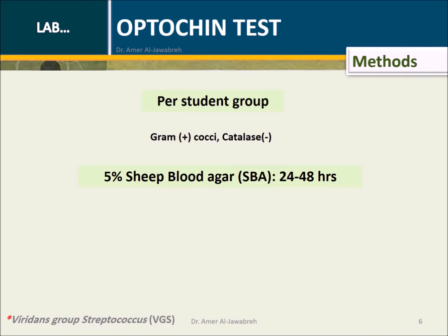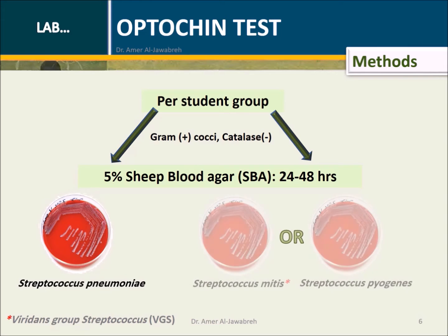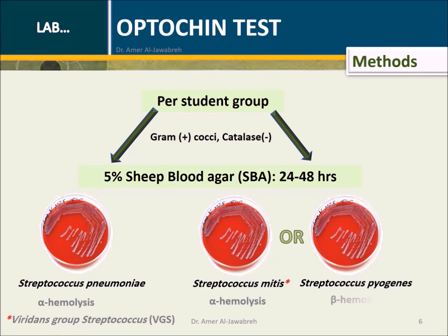Methods: Provide each student group with three sheep blood agar plates — one with S. pneumoniae, one with S. epidermidis, and one with S. pyogenes.